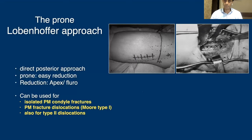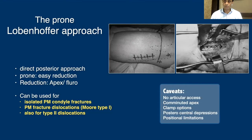The prone posterolateral approach was described to treat isolated posteromedial condyle fractures, and can also be used for certain fracture dislocation patterns. This is done prone and offers direct posterior access to your fracture area. Reduction is quite easy because it is done in extension — these fractures typically reduce in extension, so you can get a good reduction. You assess your reduction based on the apex and rely on fluoroscopy to confirm anatomical reduction of the articular segment.